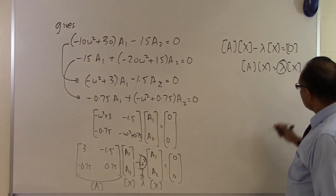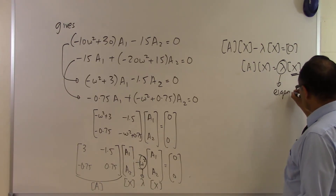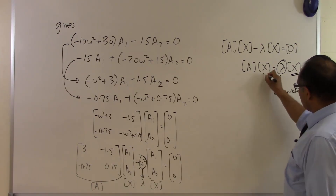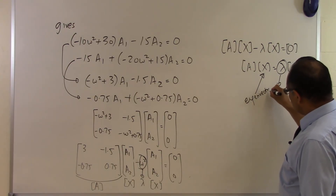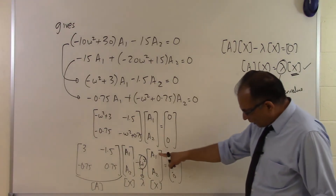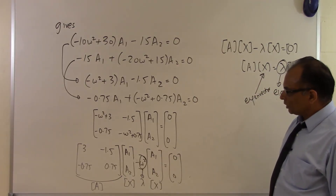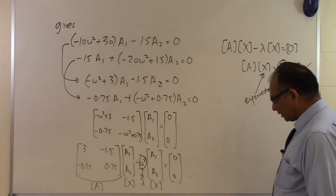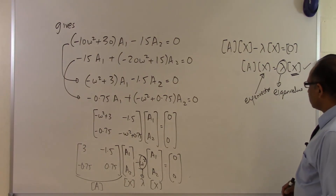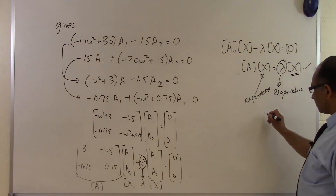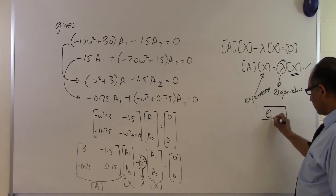This is how eigenvalues show their use in the physics of the problem. The eigenvalue λ gives ω², and the corresponding eigenvector x represents the amplitudes A1 and A2 of the spring-mass system. This is how the physics of the problem and the eigenvalue-eigenvector concept are connected. That is the end of this segment.